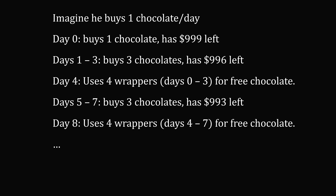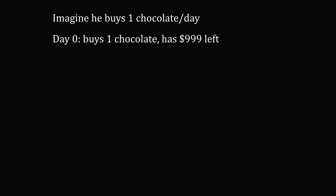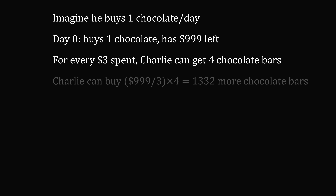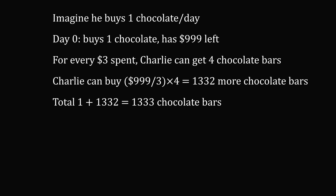The next 3 days he'll buy 3 more chocolates, subtracting 3 more dollars, then use 4 wrappers to get 1 free chocolate. So we can summarize the pattern: after buying 1 chocolate on day 0, for every $3 spent, Charlie can get 4 chocolate bars. How many additional chocolate bars can he get? This will be 999 divided by 3, multiplied by 4, which equals 1,332 more chocolate bars. So in total, this will be 1 plus 1,332, which equals 1,333 chocolate bars. And that's the answer.